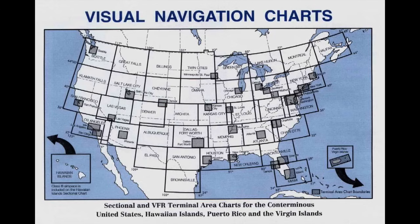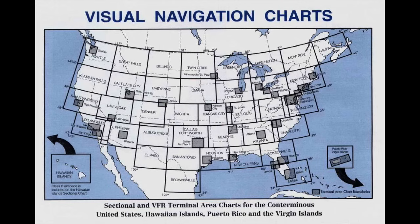Then there are what's called the terminal area charts, or TAC. They're in select areas that are the busiest of the busiest areas, demonstrated here by the little gray boxes throughout. In the Atlanta area, for example, you'll have a terminal chart, and that's going to be twice the scale of a sectional — one to 250,000 scale. In those complex areas, it's nice to have that better detail. Going the other way is the WAC, or the World Aeronautical Chart, at a scale of one to one million. If you're planning a long trip and want a bird's eye perspective of your charting and planning, a WAC is a great thing to use.